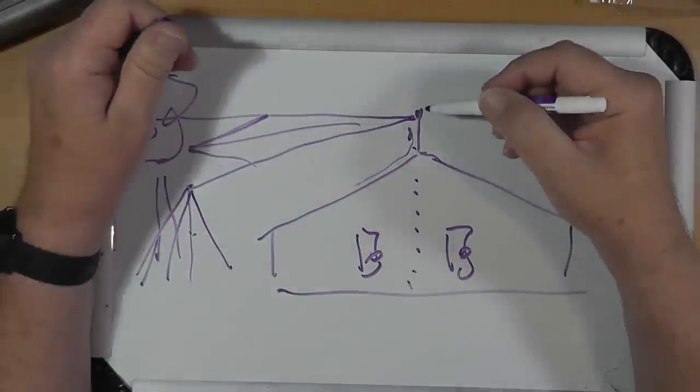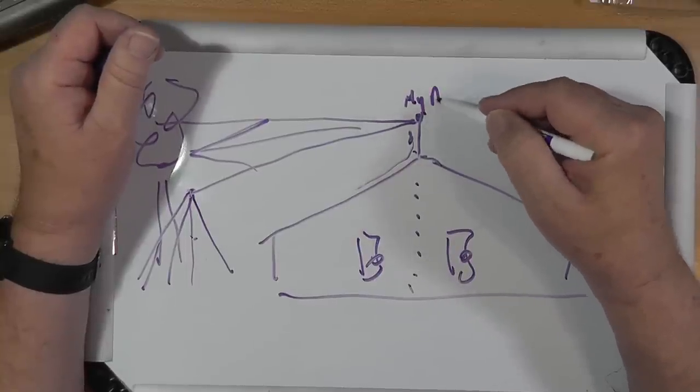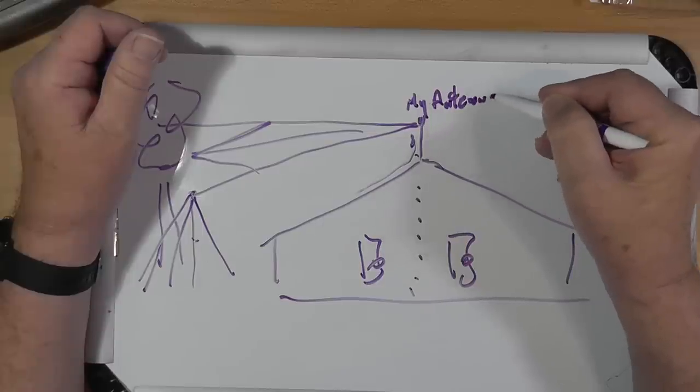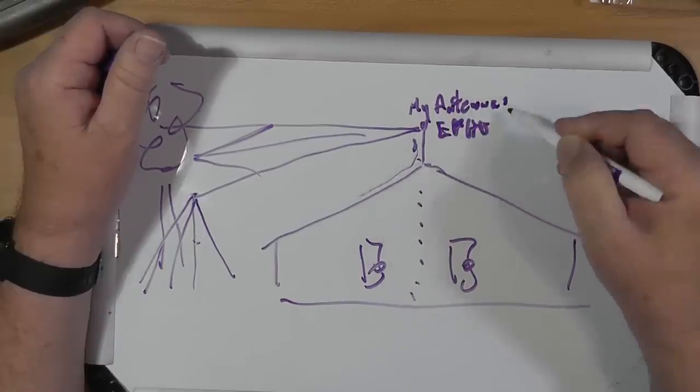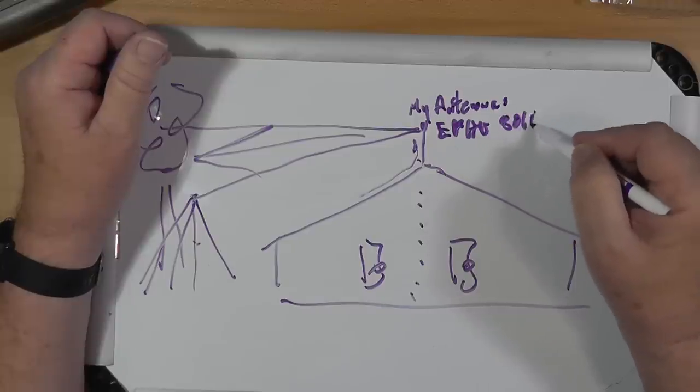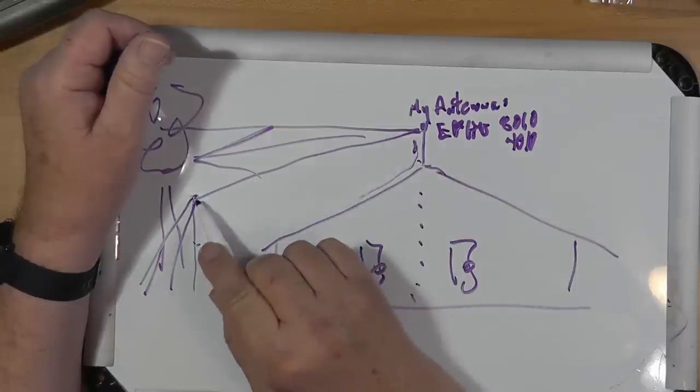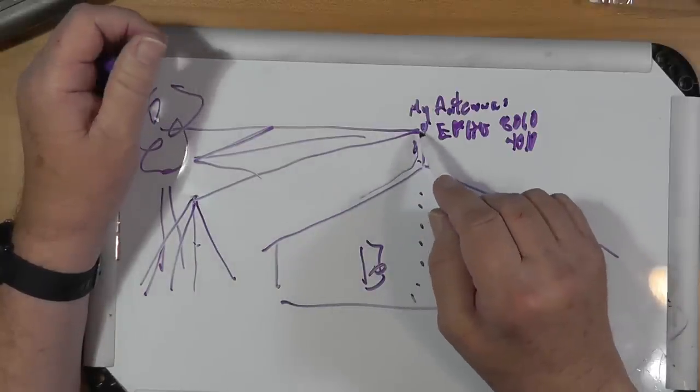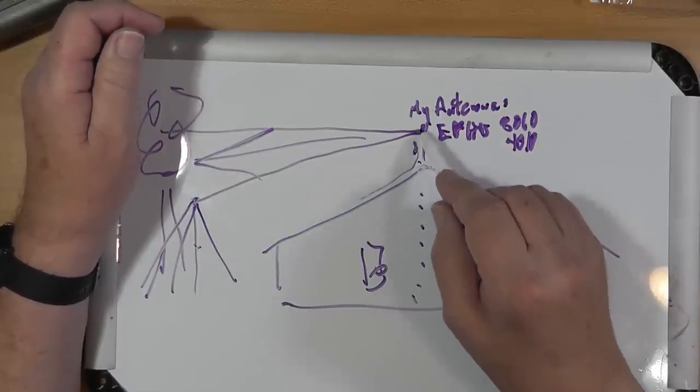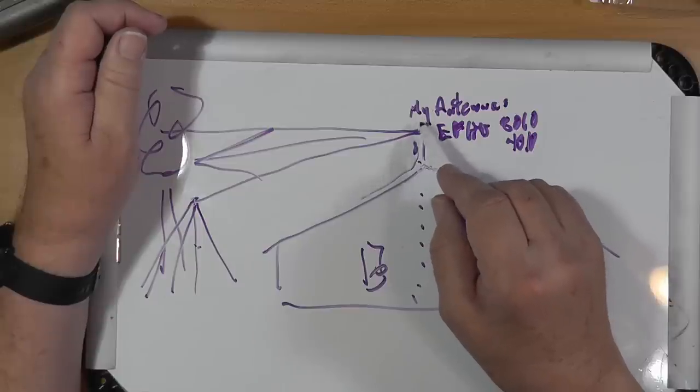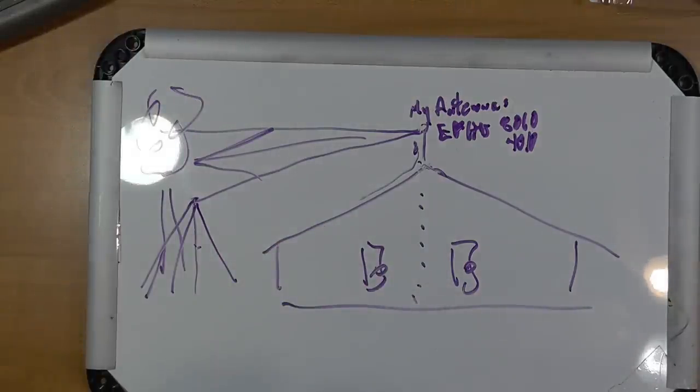Another antenna that goes up well is the MyAntennas NFED half wave. And they've got an 8010 and a 4010. And these have gray wires that are quite hard to see. So, you can put the thing, you know, if you put this toward the back of the house, it's harder to see from the street and can be quite hard to see where the antenna goes out.